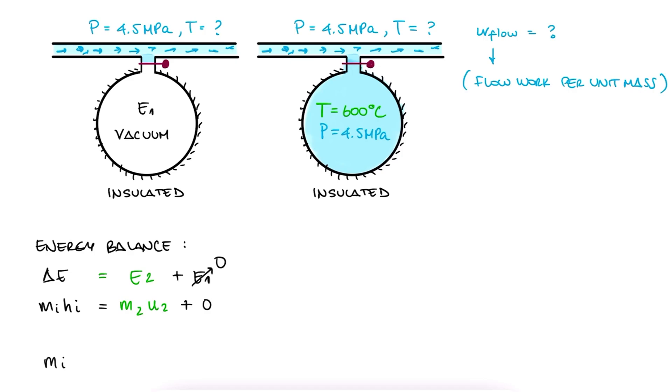And since the mass that went in is the final mass, since there was no initial mass, masses cancel out and we have that the specific enthalpy coming in is equal to the specific internal energy at the end inside the tank.